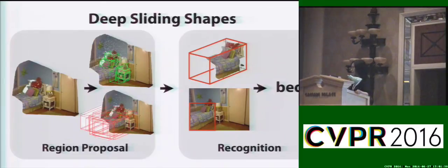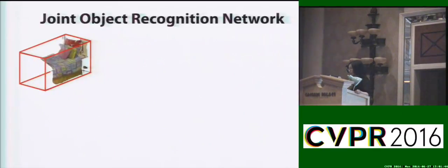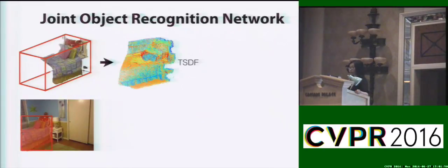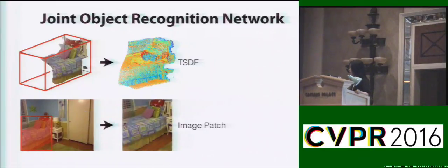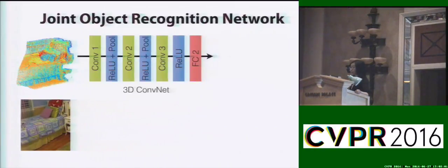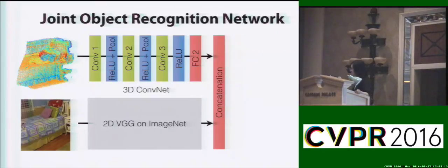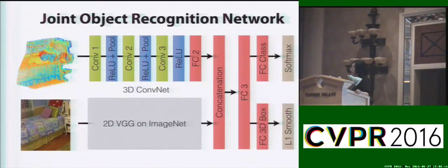After that, we feed the 3D proposals to the object recognition network. We first project the 3D proposals to 2D to get 2D proposals. We use the TSDF to encode the 3D geometries and an image patch to encode the color information. The TSDF volume is fed into a 3D ConvNet, and the image patch is fed into a 2D VGG-Net pre-trained on ImageNet. The two feature outputs from both the 2D and 3D ConvNets are concatenated and fed into several fully connected layers to produce the object categories and 3D bounding boxes.